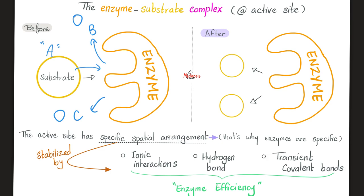This specific spatial arrangement, in this case a sphere, is important because it gives the enzyme its own specificity. How can we stabilize this sphere-shaped active site? We have many mechanisms, including ionic interactions, hydrogen bonding, and transient covalent bonds. And these contribute to enzyme efficiency.